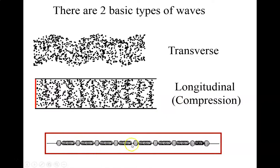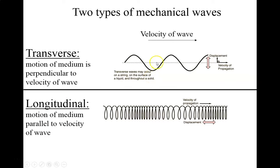To reiterate: in a transverse wave, the medium oscillates up and down while the wave travels to the right — perpendicular. In a longitudinal wave, the wave travels to the right and the medium oscillates left and right — we see compressions. To create a transverse wave you shake the medium up and down; to create a longitudinal wave you push the end in and out to create compressions.